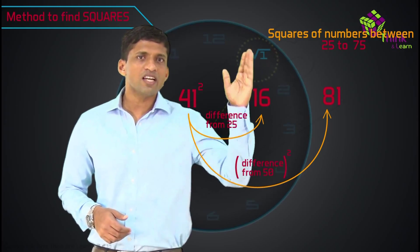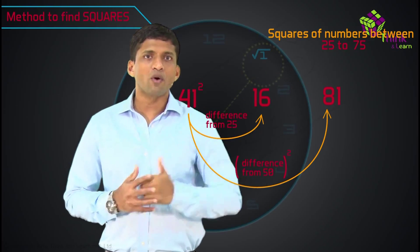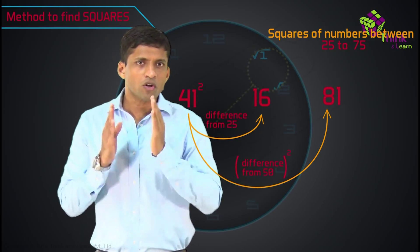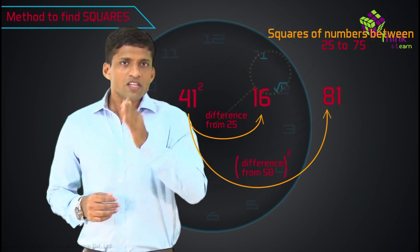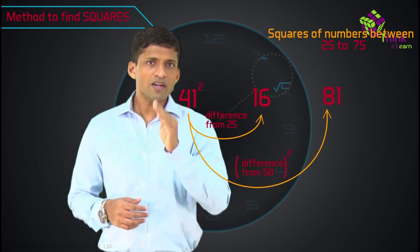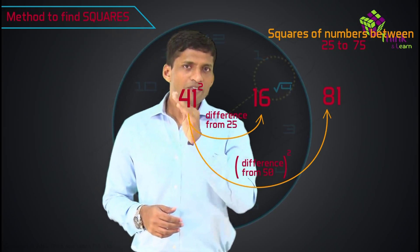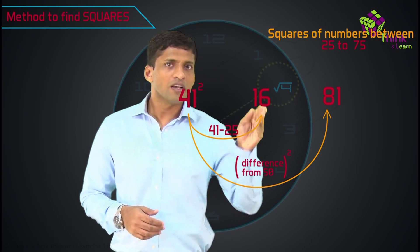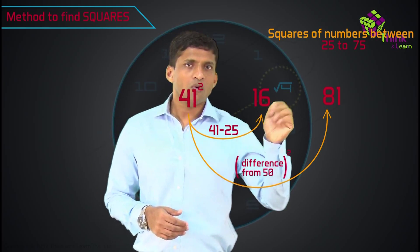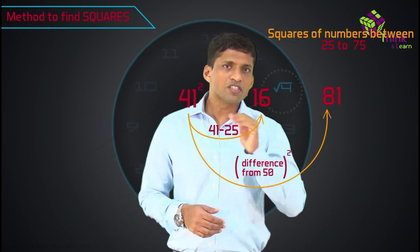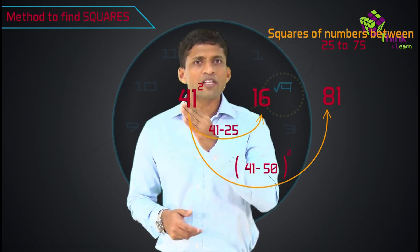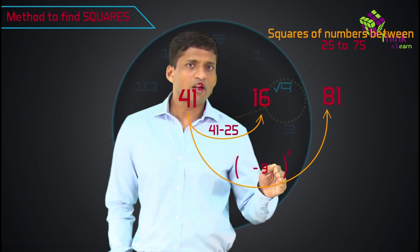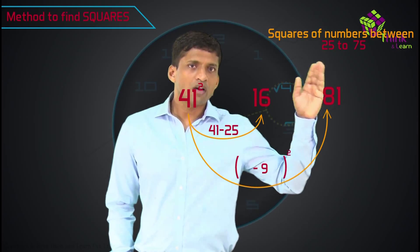You can do it in seconds. 1681 will be 41 square. Now let me help you understand what this method is all about. To find 41 square: take the difference from 25, that is 41 minus 25, so we get 16 as the first two digits. Now take the difference from 50, which is 50 minus 41, you get 9. Square of that — what is 9 square? 81 — as the last two digits.